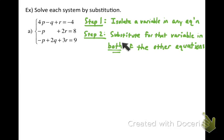Now this 'both' part is not going to be possible every time, and you'll see that in the second system that I solve. But if it's possible to substitute for that variable in both of the other equations, do so. As a result, you'll end up with two equations with two variables, and then you can solve that new two-variable system. These are the two principles to follow for the substitution part of solving this three-variable system.